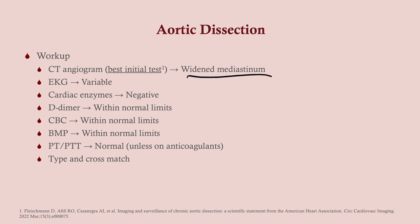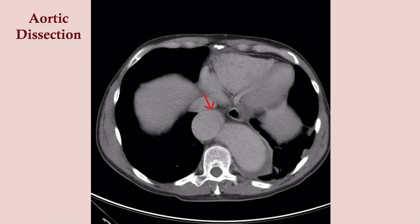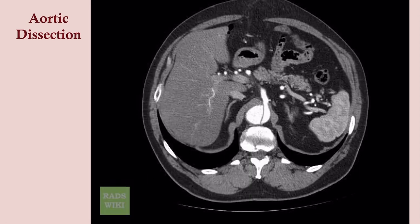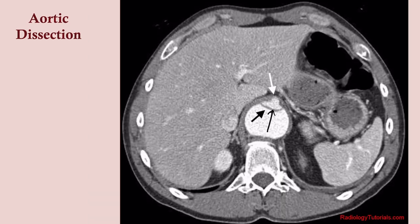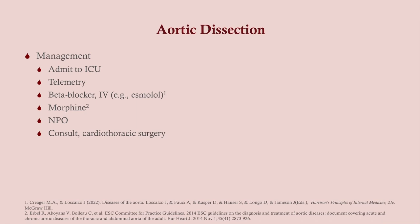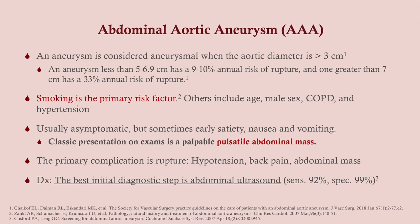On CT angiogram you'll see a widened mediastinum, and you can identify the location of the dissection — important information for your surgeon. Here you can see the dissection flap on imaging. These patients are admitted to the ICU on telemetry. Manage pain and hypertension with beta blocker and morphine, place an NPO order since they'll be going to surgery, and consult surgery.